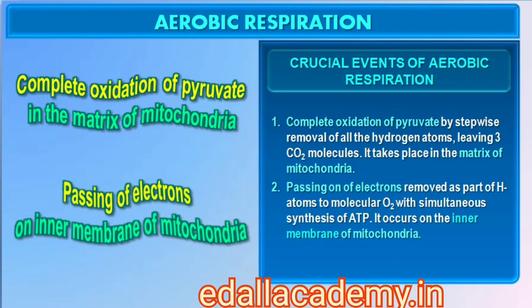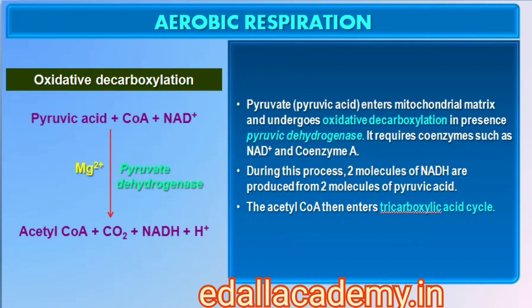The crucial events in aerobic respiration are: the complete oxidation of pyruvate by the stepwise removal of all the hydrogen atoms, leaving three molecules of CO2; and the passing of electrons removed as part of hydrogen atoms to molecular O2 with simultaneous synthesis of ATP. The first process takes place in the matrix of the mitochondria, while the second is located on the inner membrane. Pyruvate, formed by glycolytic catabolism of carbohydrates in the cytosol, after entering the mitochondrial matrix undergoes oxidative decarboxylation catalyzed by pyruvic dehydrogenase, requiring coenzymes including NAD+ and coenzyme A.